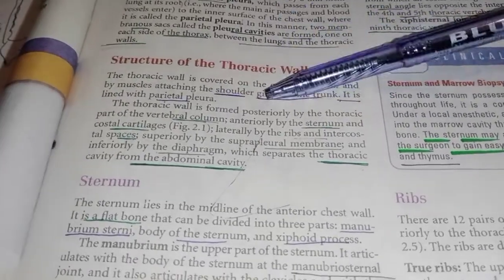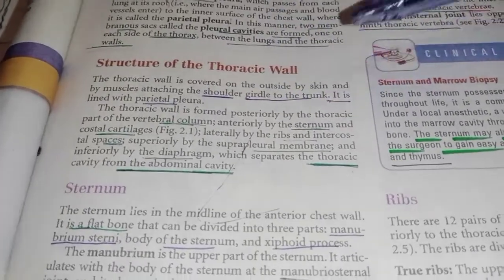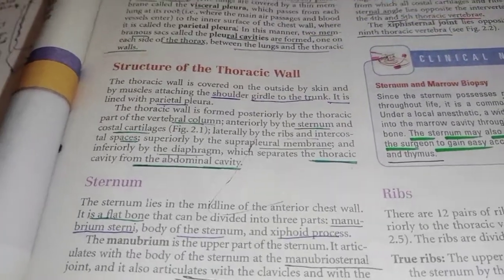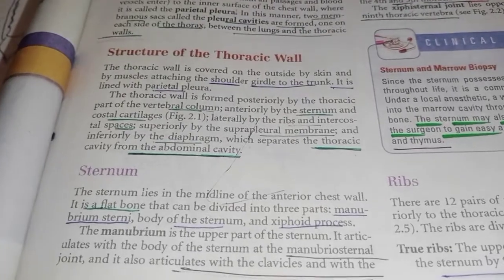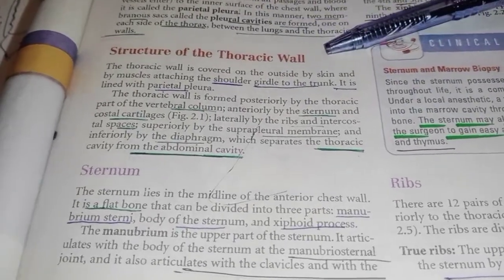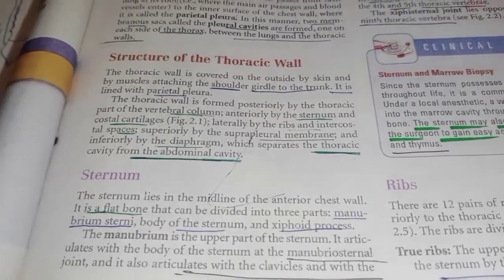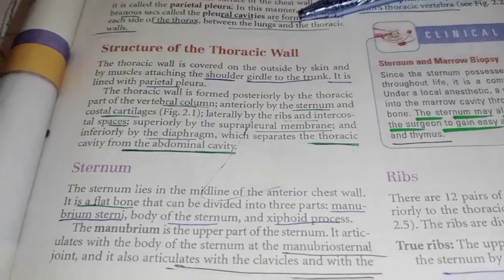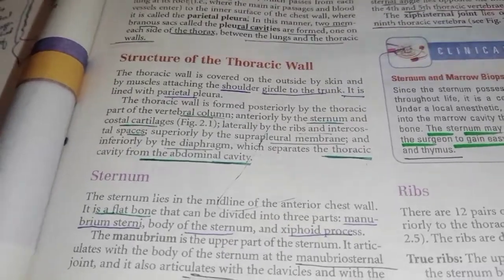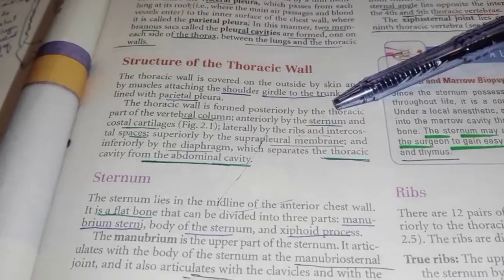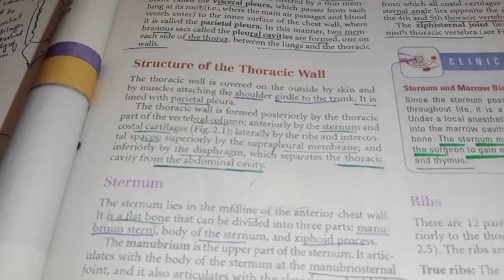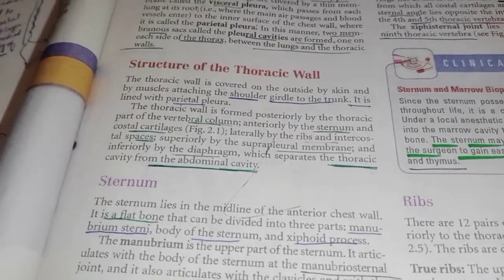Basically, if we talk about the thoracic wall, the thoracic wall is covered from outside by skin. The muscles in the shoulder are attached to it, and it is covered internally by the parietal pleura. So this is a basic introduction.